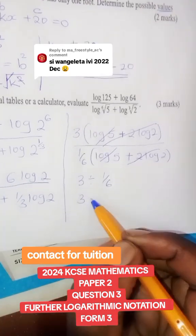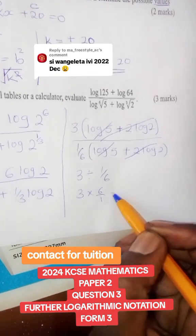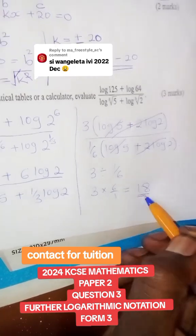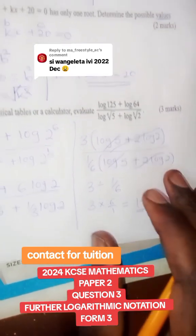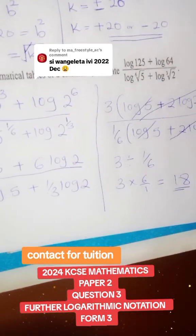Therefore, it is 3 times 6 over 1. The answer, without using a mathematical table, is supposed to be 18.